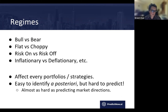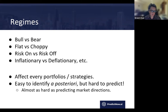Risk-on meaning people are very eager to take risk — they buy equities, buy emerging market currencies, buy high-yield bonds. Versus risk-off regimes where people are very conservative and very risk averse — they sell equity, buy government investment grade bonds, buy US dollar and short emerging market currencies.